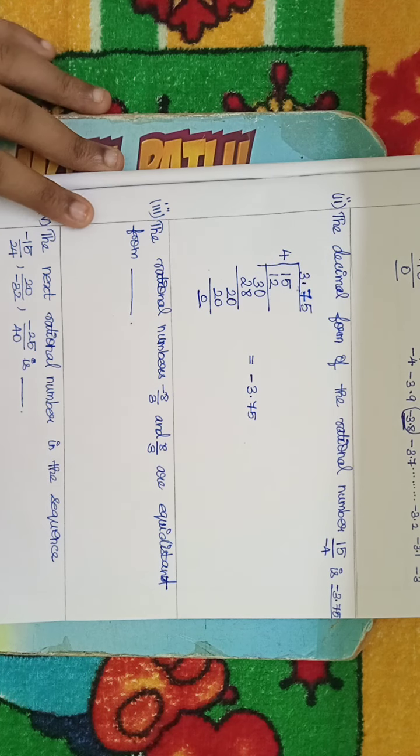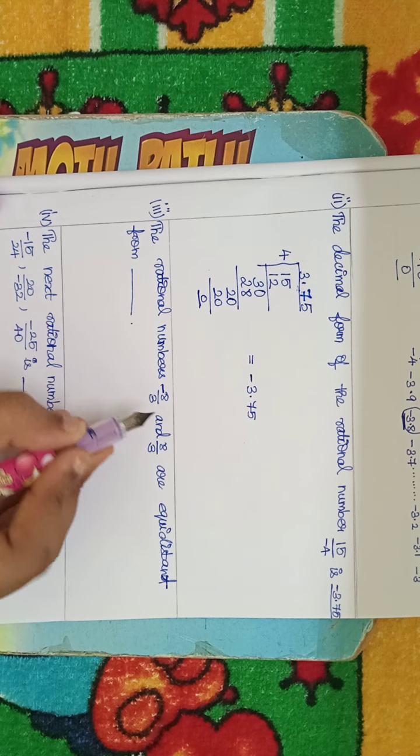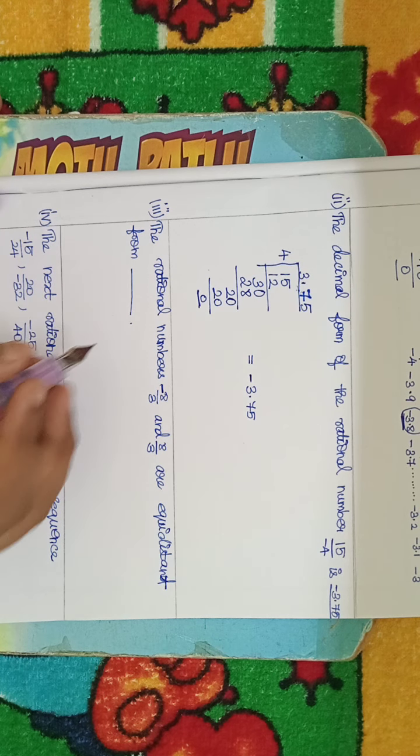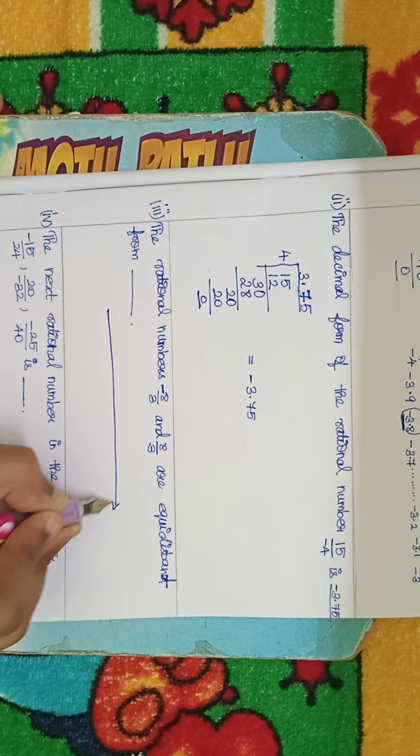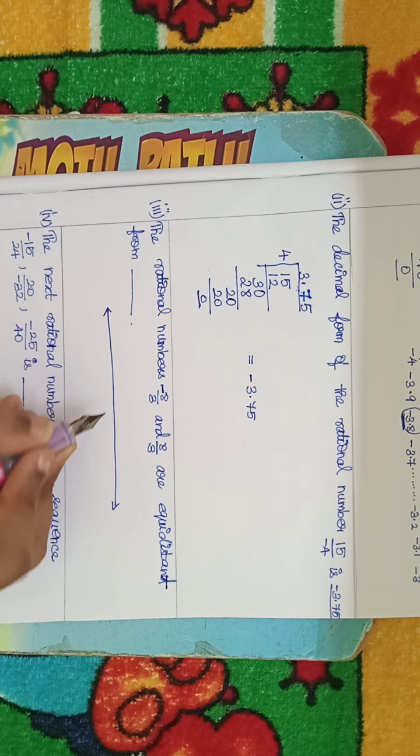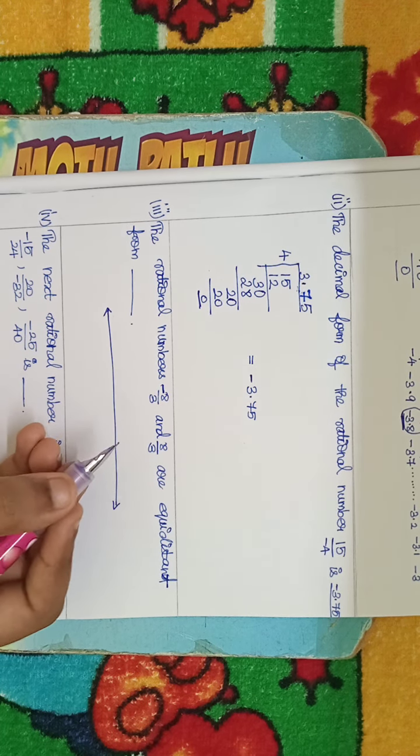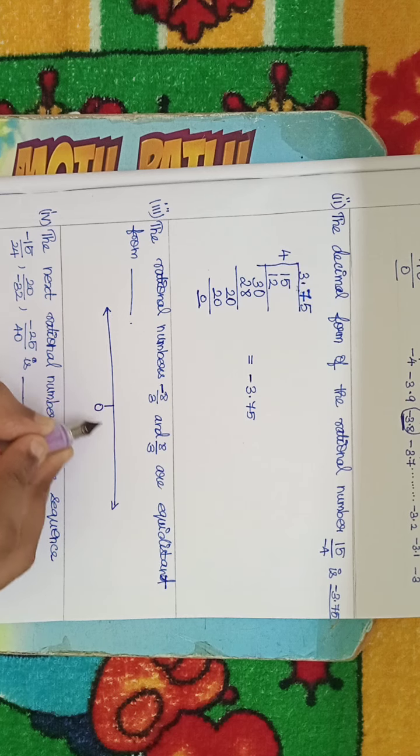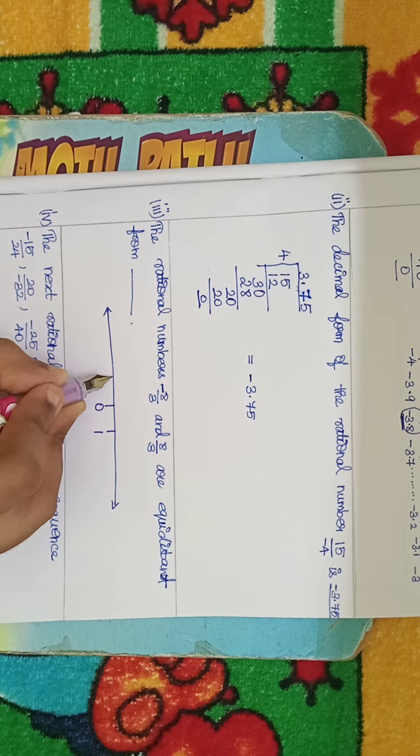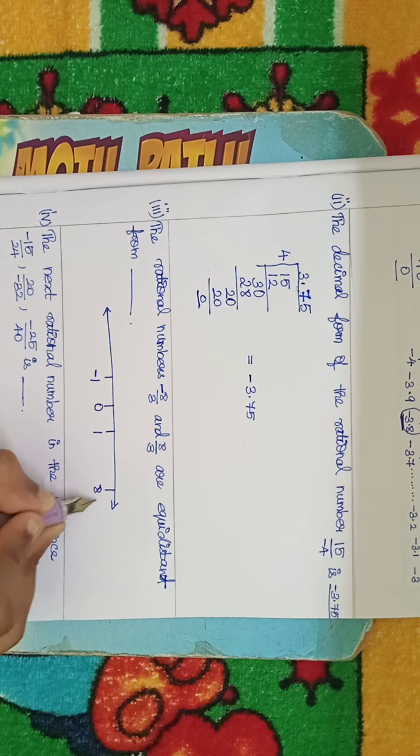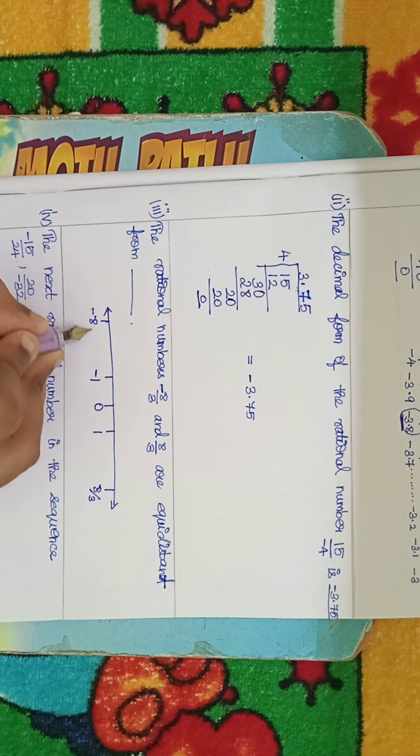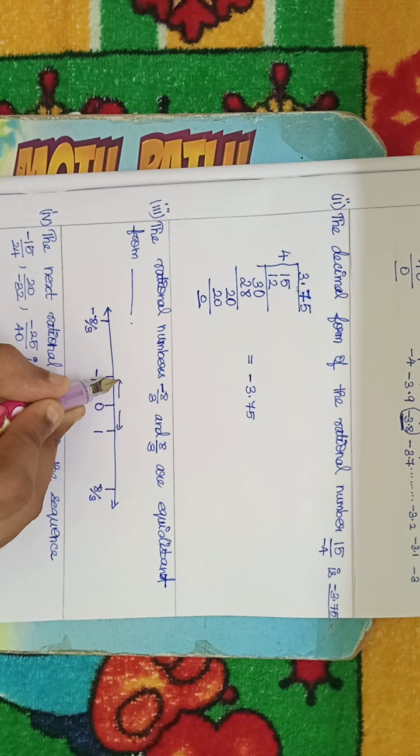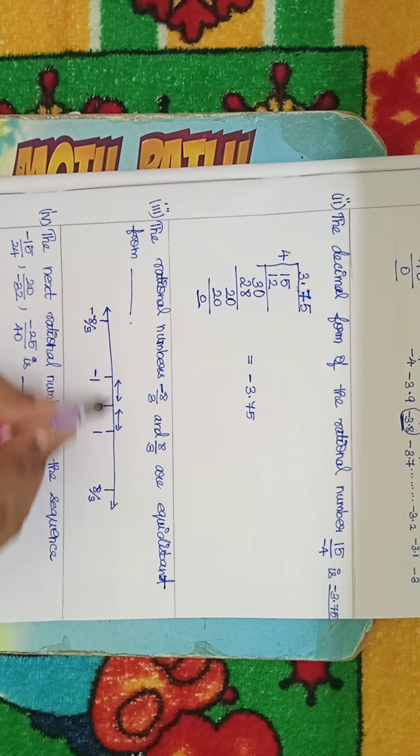Next is some number. The rational numbers minus 8 by 3 are equal distance from dash. For example, 0 is minus 8 by 3 plus 8 by 3, equal distance. This is minus 8 by 3. This looks like equal distance. If you see, this number is equal distance. Minus 1 is equal distance.